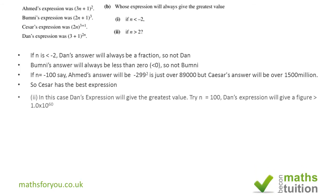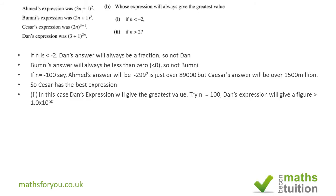For Section B part ii, we want the biggest value for large positive n. Suppose n=100: for Ahmed, 3×100=300, 300²≈90,000. For Bumnis, 200³≈8 million. For Cesar, 200 to the power 4≈1.6 million (note: 200⁴ is actually ~1.6 billion as implied). But for Dan, when n=100, we're talking about something like 10 to the power 60 — so Dan is the answer for Section B part ii.